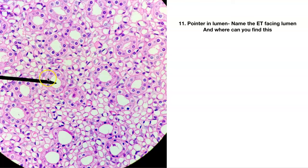Number eleven — pointer in the lumen. You've got lots of these in this slide. This is easy: simple cuboidal. Where do you find that? You're going to find this in the kidney tubules — lots of tubules in the kidney — and in glands.